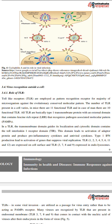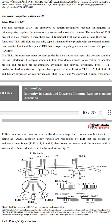In a TLR, the transmembrane domain guides its localization, and the cytosolic domain contains a toll-interleukin-1 receptor (TIR) domain. This domain leads to activation of adaptor proteins and genes that suppress viral replication. TLR 1, 2, 4, 5, 6, and 11 are expressed on the cell surface, while TLR 3, 7, 8, and 9 are expressed in endolysosomes.